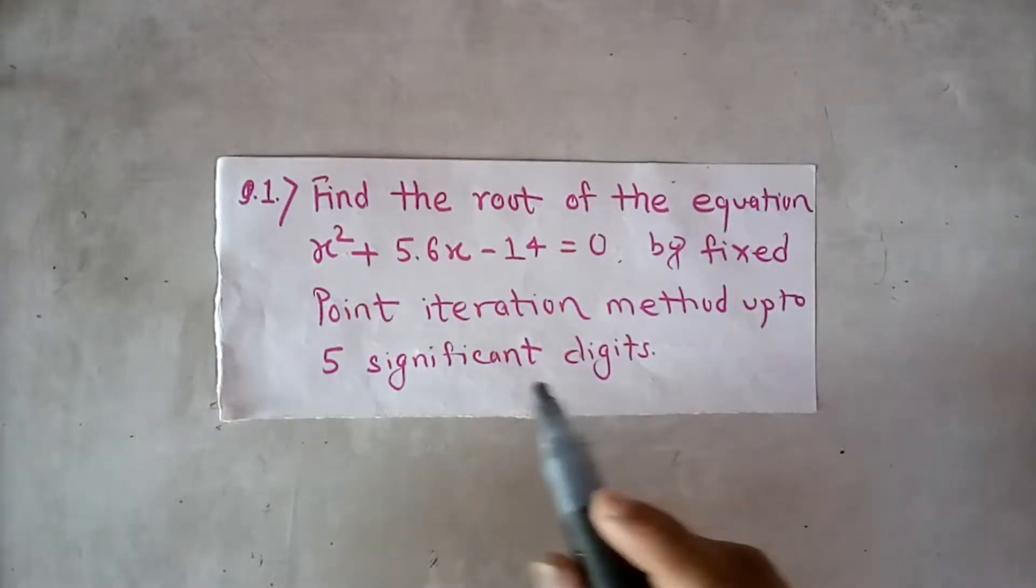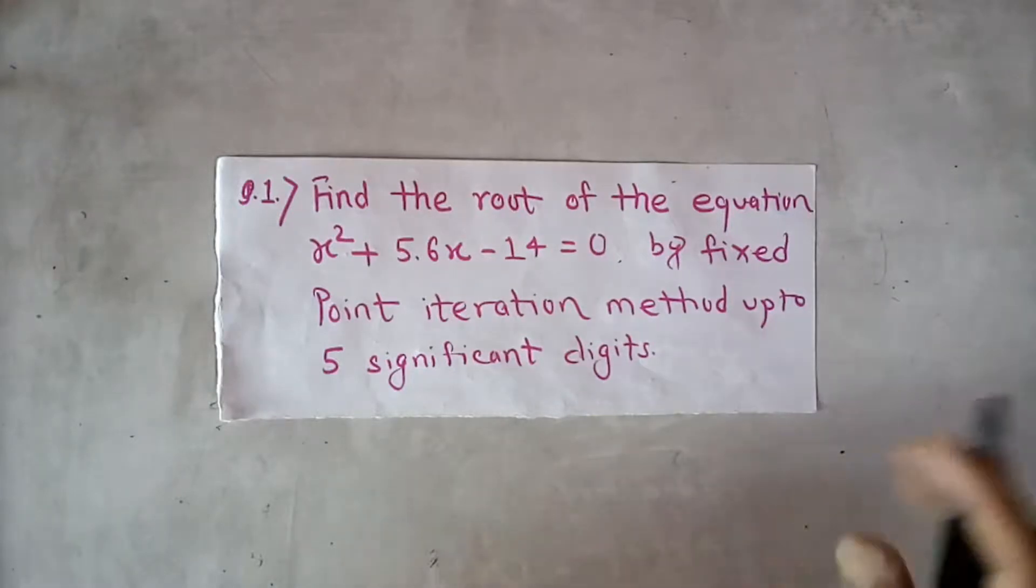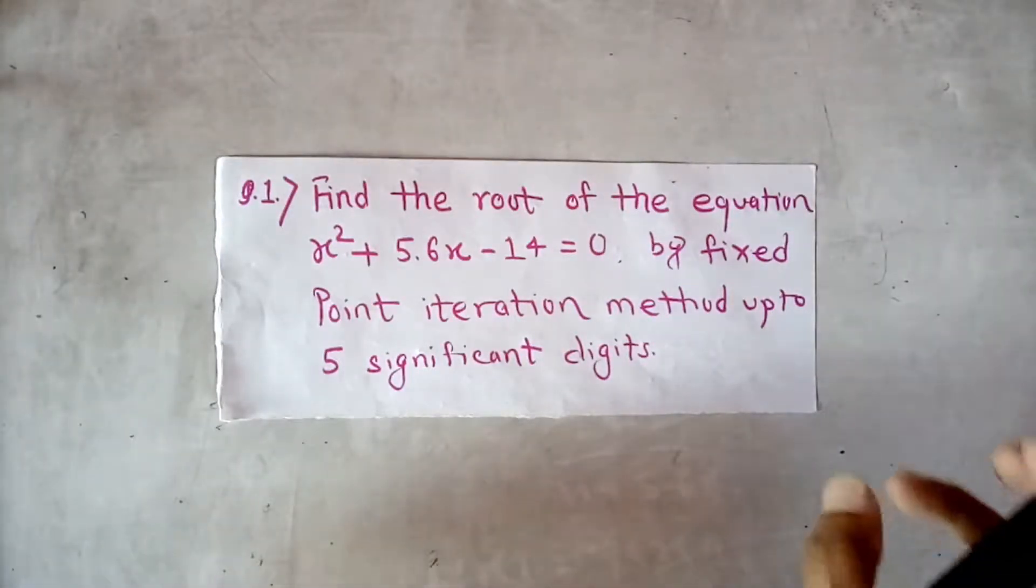Let's solve the equation. Find the root of the equation x squared plus 5.6x minus 14 equal to 0 by fixed-point iteration method up to 5 significant digits.